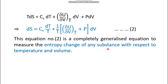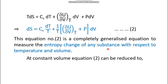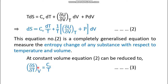At constant volume, the dV term becomes zero and equation two reduces to dS = (Cv/T) dT. Moving dT to the left-hand side gives a partial differentiation because we are holding volume constant. So the final expression, equation three, is (∂S/∂T)_V = Cv/T.